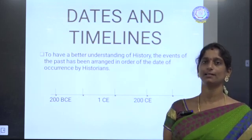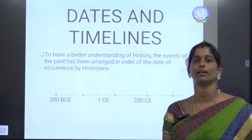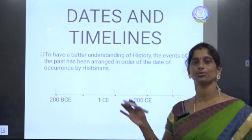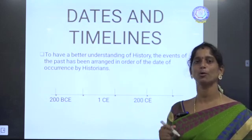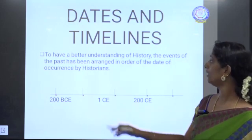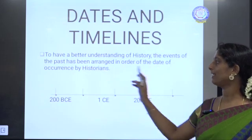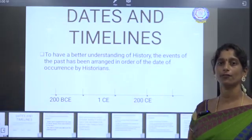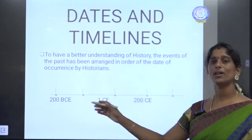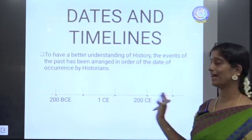We are moving to the next topic: Dates and Timelines. What is today's date — we ask this all the time. But who told us that today's year is 2020? We have been moving year by year and come to 2020. To have a better understanding of history, the events of the past have been arranged in the order of their date of occurrence — events recorded from the beginning in order — and that is known as the timeline.